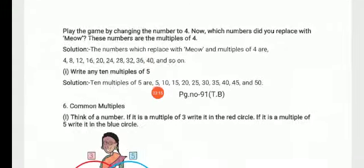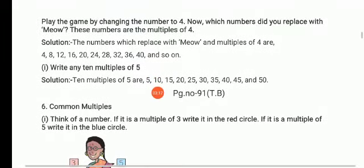Now, next is play the game by changing the number to four. Now which numbers did you replace with meow? These numbers are the multiples of four.